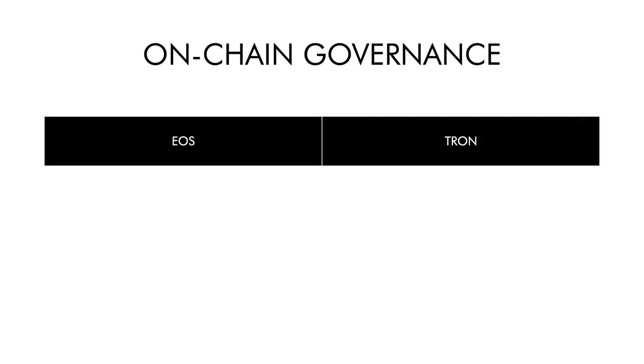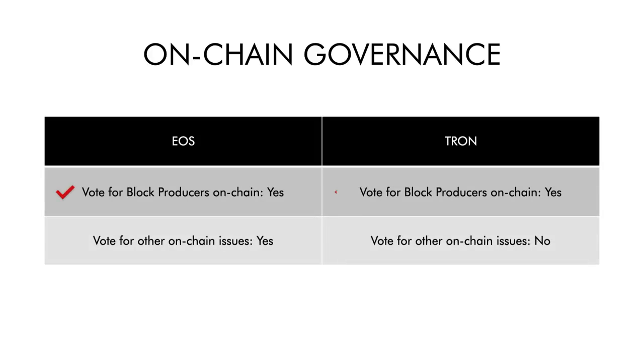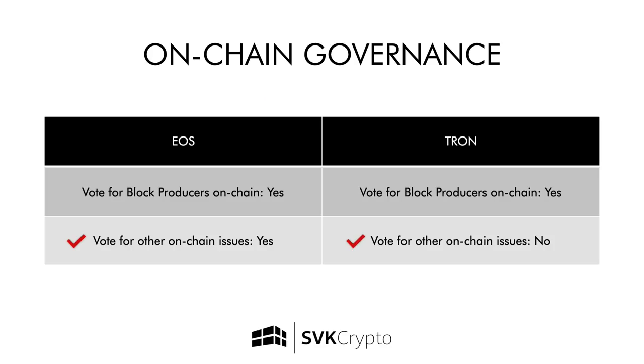Next up is on-chain governance. Both EOS and Tron have some degree of on-chain governance. Because they're both Delegated Proof of Stake networks, they require each token holder to be able to vote for different block producers. Where EOS excels is that it enables any token holder to propose a change to the network, have a referendum, and if that has enough support, it can be voted in by 15 out of the 21 block producers. Currently on Tron, that isn't possible and the only entities who can propose a change are the elected block producers.